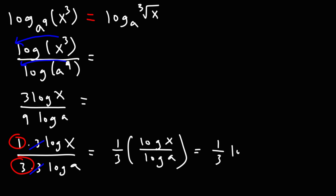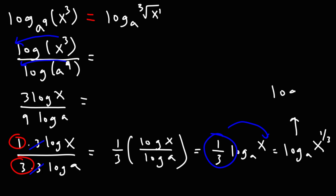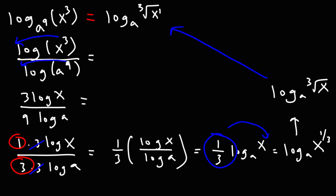So this is going to be 1/3 log base a of x. Now this coefficient — I'm going to move it to the exponent position, so this becomes log base a of x to the 1/3. Now x to the 1/3 is the cube root of x, so the final answer is log base a of the cube root of x. And as you can see, this equation is a true equation — it's been proven true.